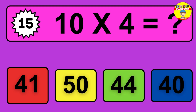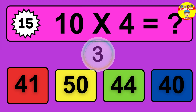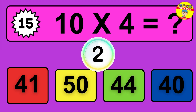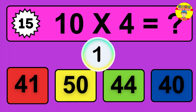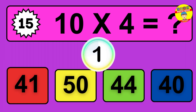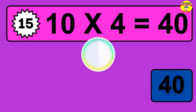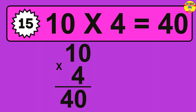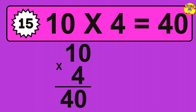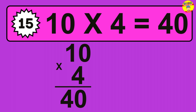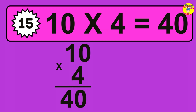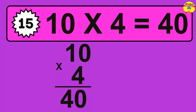Question 15. 10 times 4 equals what? The answer is 10 times 4 is 40. To calculate, we have 10 groups with 4 balls each one. So, how many balls do we have? 40 balls.